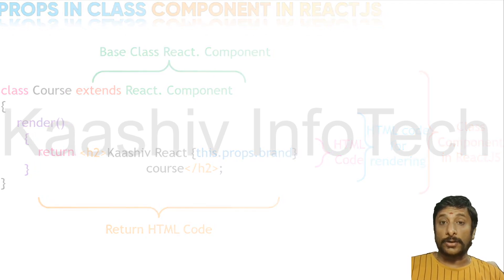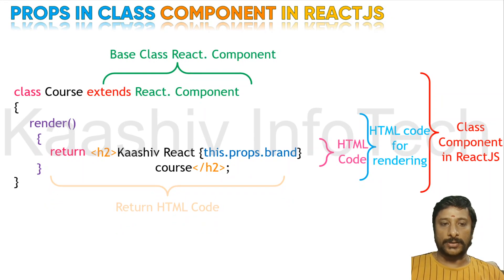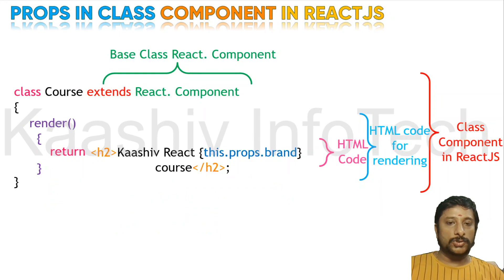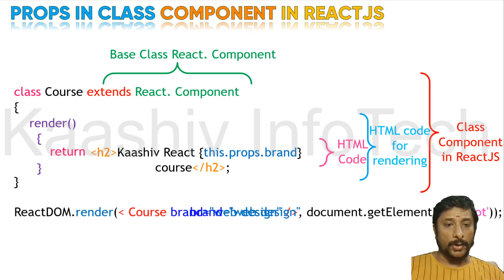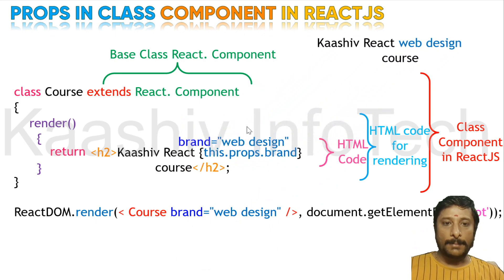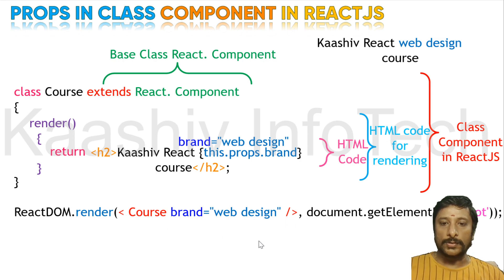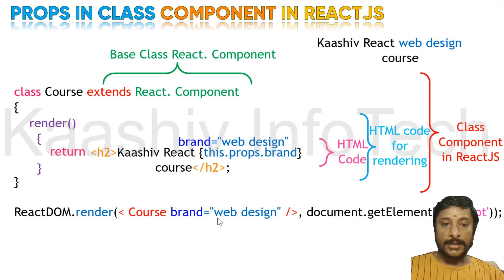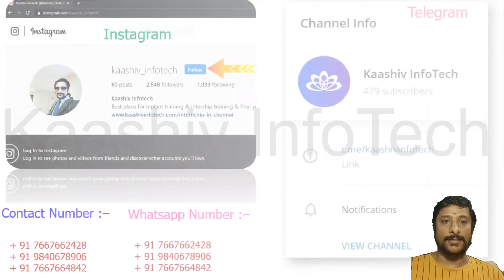Now we need to pass the parameter and render it. We write ReactDOM.render with the Course component, passing brand equal to 'web design'. The brand value moves here and you get the output from Kashwin React. So the parameter is passed here and it goes through — this is how your class component works with props.